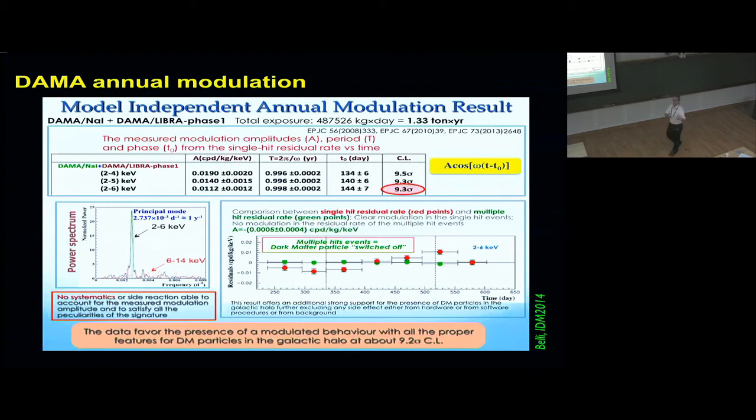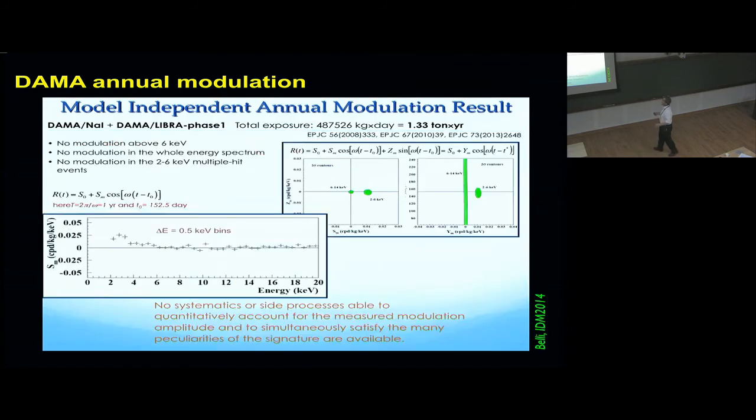When you look at the properties of the modulation, you find the period is what we expect in the halo models. The spectrum of recoil energies fits what we expect. It's kind of a mystery. The question is what is this modulation due to?